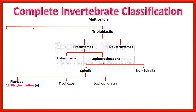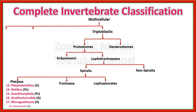Among Platyzoa: Platyhelminthes, Rotifera, Acanthocephala, Gnathostomulida, Micrognathozoa, and Gastrotricha — six phyla belonging to clade Platyzoa. Platyhelminthes are acoelomate; Rotifera are pseudocoelomate; Acanthocephala are pseudocoelomate; Gnathostomulida are acoelomate; Micrognathozoa are acoelomate; and Gastrotricha are acoelomate. A common exam question: among Platyzoa, which phylum has pseudocoelomate characteristics? — Gastrotricha can also be asked about.